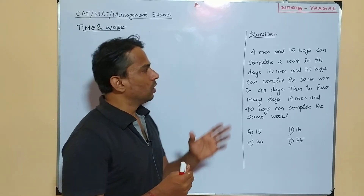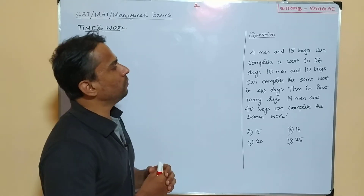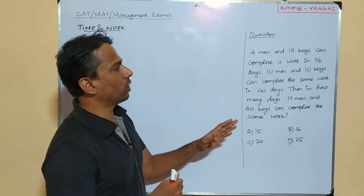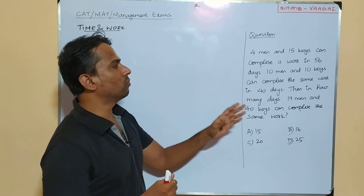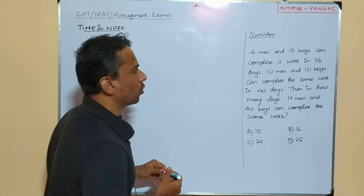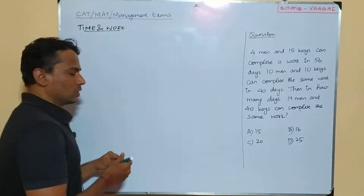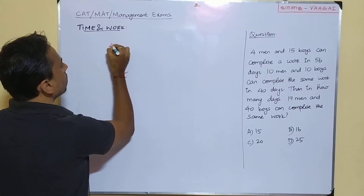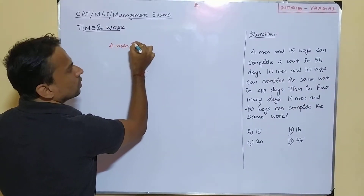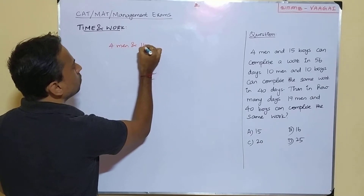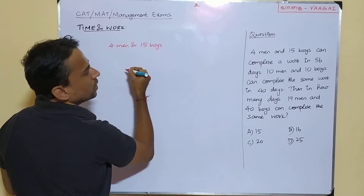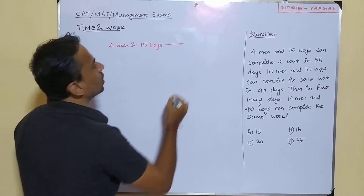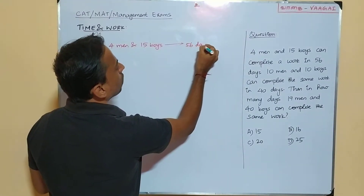Here is our question. 4 men and 15 boys can complete a work in 56 days. We will note down this information: 4 men and 15 boys will complete the task in 56 days.